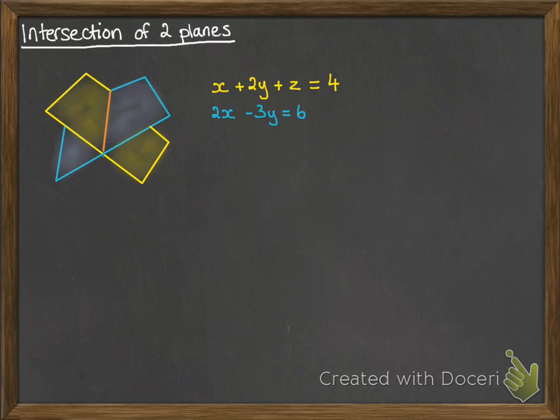Now the equations of these two planes, we're just going to use an example to help you to see what's going on here. So the yellow one has the equation of x plus 2y plus z equals 4, and the blue plane is 2x minus 3y equals 6.